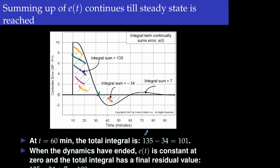The output then goes below the set point again, giving a positive area. When the output becomes steady, the total area is approximately 135 minus 34 plus some additional positive area, coming to approximately 108 units. This is the integral action when the output reached steady state.